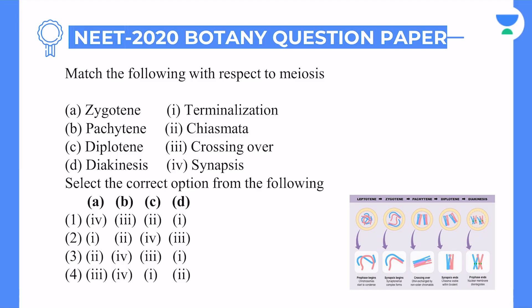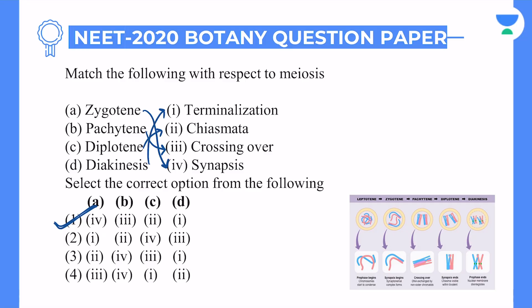Next question — very important unit: cell cycle and cell division. If you are a biology student, mitosis and meiosis should be very clear. Match the following question. Looking at zygotene: there is pairing of homologous chromosomes, called synapsis — so A goes directly with four. In pachytene, you have crossing over. In diplotene, chiasmata becomes visible — it will form in pachytene but show in diplotene. And diakinesis is where terminalization takes place. You match all with option number one.